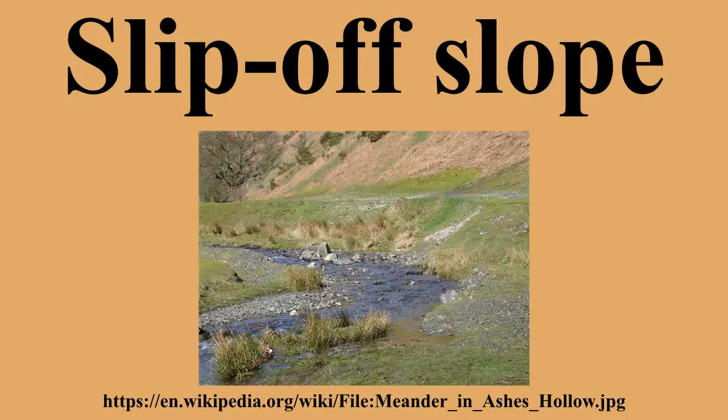The terms are used in connection with the formation of meanders on a river. Deposition on the slip-off slope occurs due to the helical flow in meandering reaches that is constantly transferring sediment from the undercut slope on the outside of the meanders to the inside river banks. The deposition of material on the slip-off slope often results in the formation of a point bar.